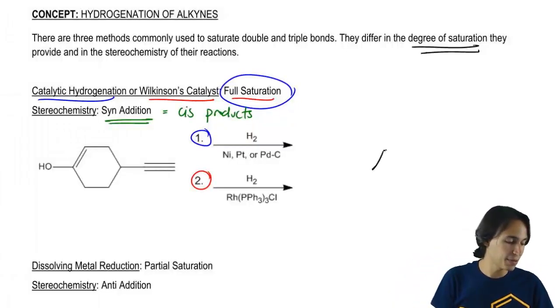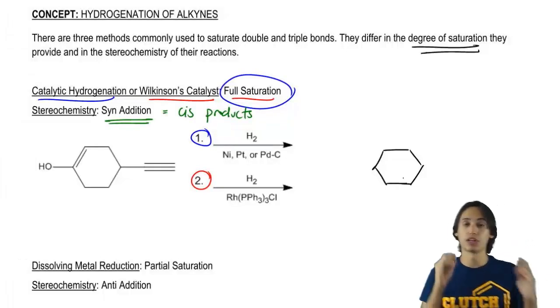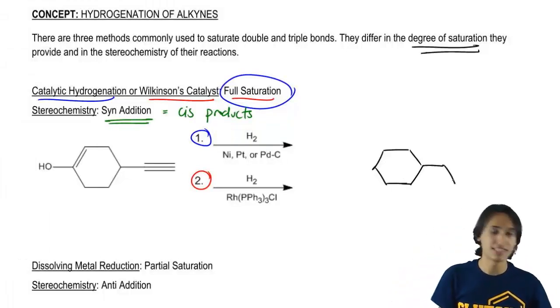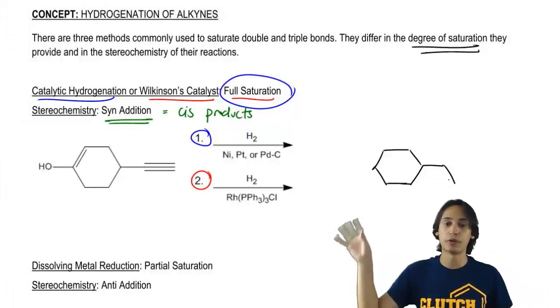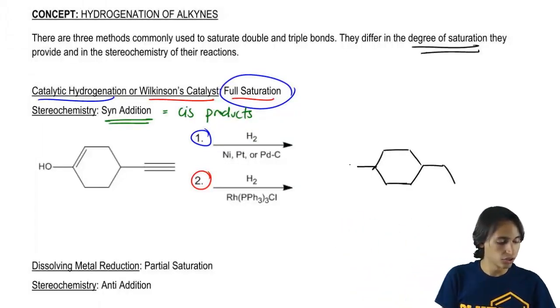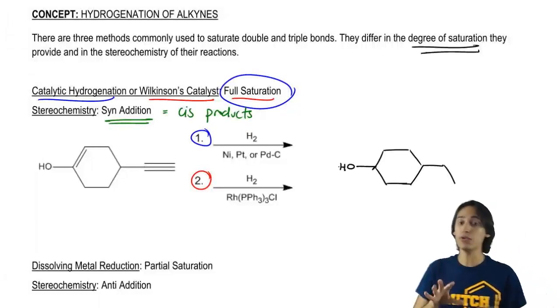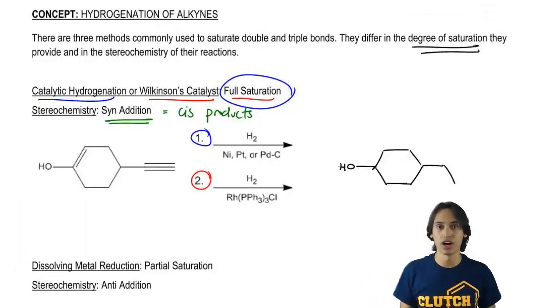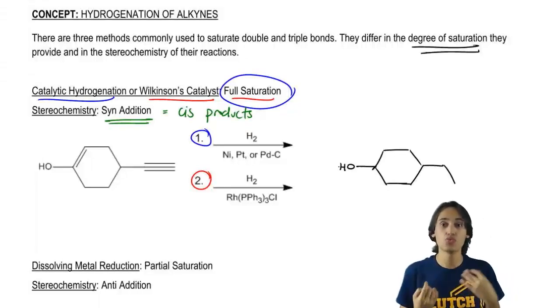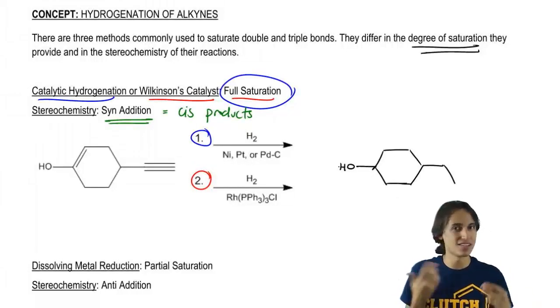Let's go ahead and draw our products. Basically, I would get the same exact sigma framework. When I say sigma framework, I'm just saying all the sigma bonds are the same. But now I would get a single bond over here, so that triple bond just turned into an alkane. This alcohol is still here, and that double bond is also gone, meaning that there's no pi bonds left. What this is really good at is getting rid of pi bonds.